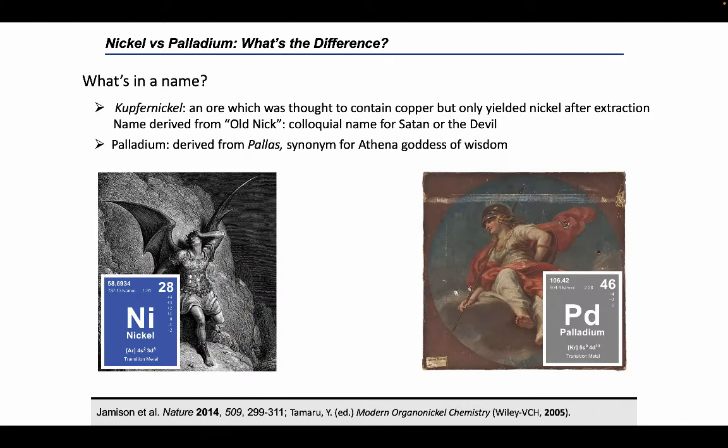Even the origin of their names seem to pit nickel as the black sheep compared to palladium. The word nickel is derived from the name of the ore from which it was first isolated — a compound German word: kupfer, meaning copper, and nickel, which was a slang term for the Christian devil or Satan. On the other hand, palladium gets its name from the Greek word pallas, which was another name for Athena, the goddess of wisdom. Despite these diametrically opposite origins, nickel and palladium both possess remarkably useful reactivity in organometallic catalysis, stemming from their unique properties.